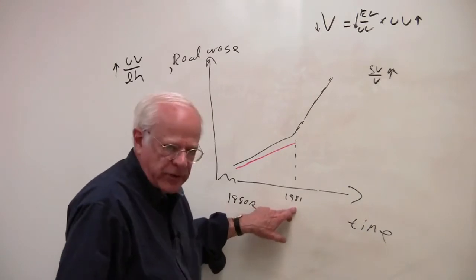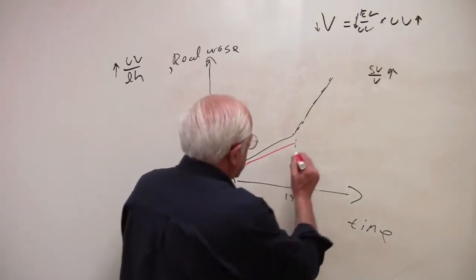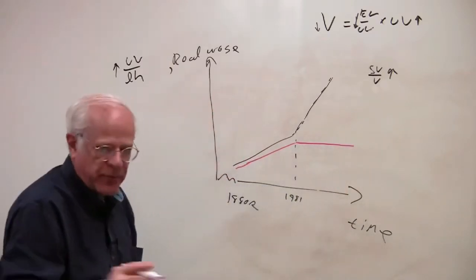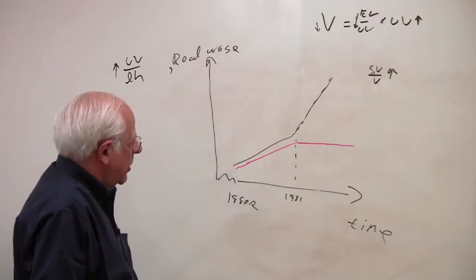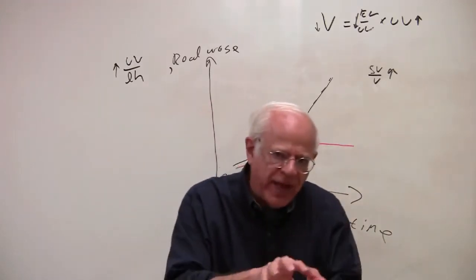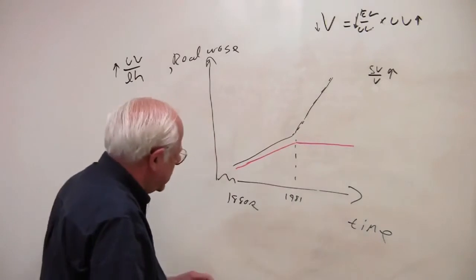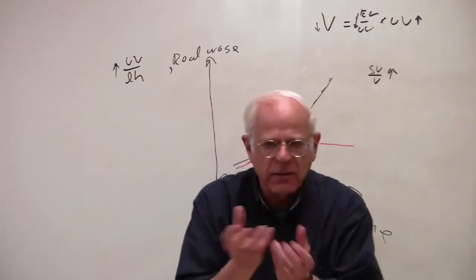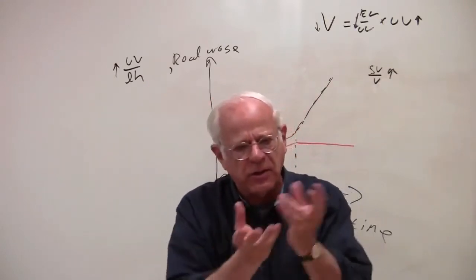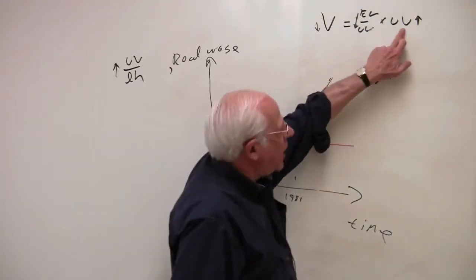1981 — things change. For the first time in US history, this real wage stops rising. It actually falls a bit right up to the present. So we have something new after 1981, reflected in the solution to that crisis: because of changes in the labor market, this attack upon unions, a changed culture in the US in which workers are willing to accept a lower real wage, the real wage no longer rises.